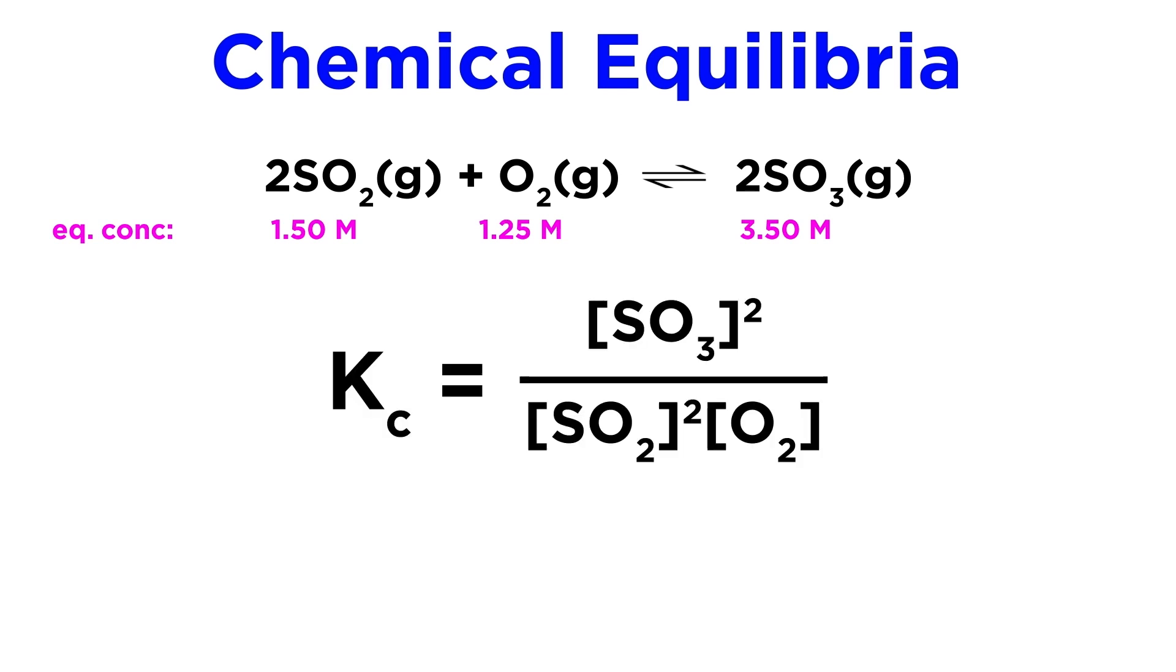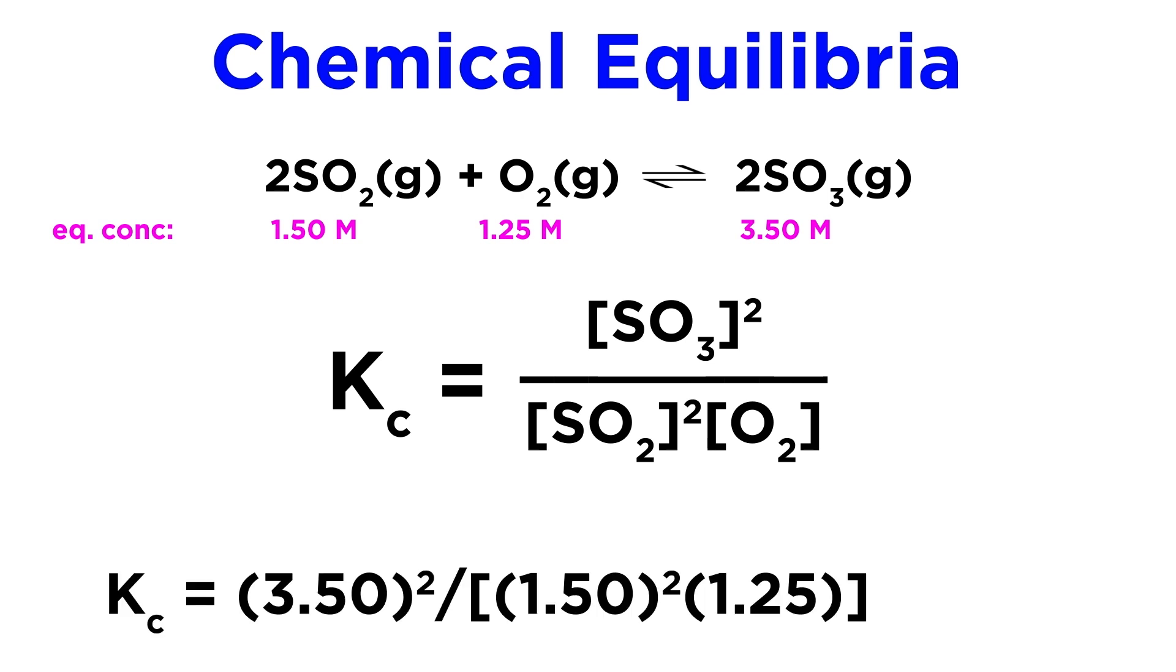Well first we must write the equilibrium expression. That will involve SO3 concentration squared up top over SO2 concentration squared times O2 concentration. Now we simply plug in the equilibrium concentrations where they belong, and then plug this into a calculator. 4.36 is what we should get, and this will be a unitless value.